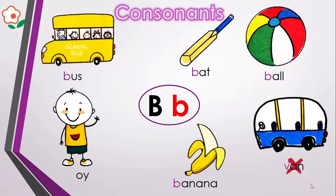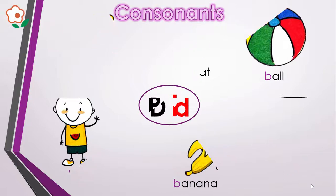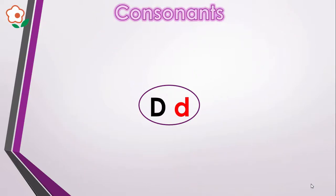Here we have our boy. Say boy. Boy is also beginning with B. Let's move towards the next letter. And here we have D. D is the name of the letter and D is the sound.